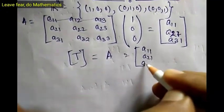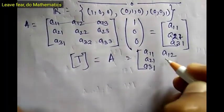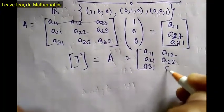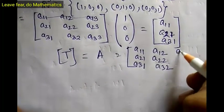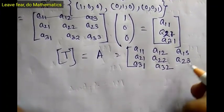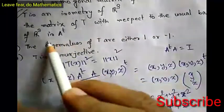Similarly, multiplying A by (0, 1, 0) gives the second column: A₁₂, A₂₂, A₃₂. And multiplying A by (0, 0, 1) gives the third column: A₁₃, A₂₃, A₃₃. So the matrix representation of T is A itself. But option B states the matrix representation is A transpose — this option is false, because we have shown it is A, not A transpose.